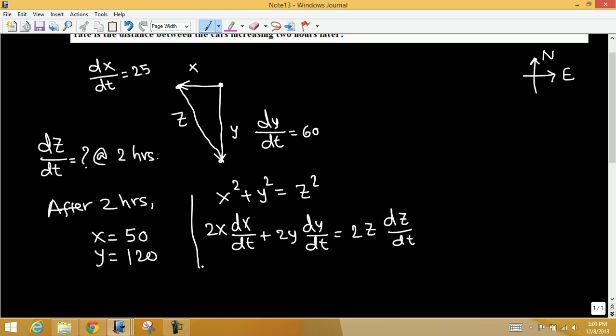Now plug in the given values. 2 times x, which is 50, times dx/dt, which is 25, plus 2 times y, which is 120, times dy/dt, which is 60, equals 2 times z times dz/dt.